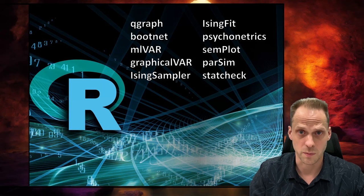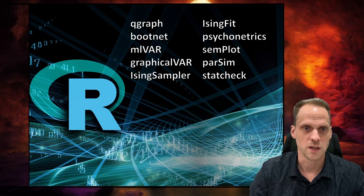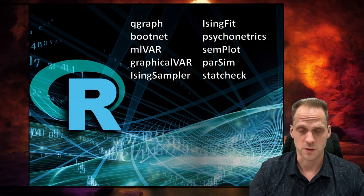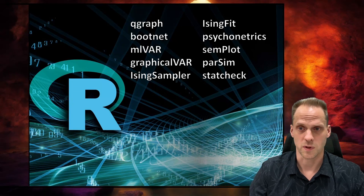And the Psychonetrics package is actually the biggest project I'm working on at the moment. This is a big R package for confirmatory network modeling and psychometric network modeling. For example, you can do multi-group analysis in there, or you can include latent variables. There's some methods for longitudinal data analysis that are not available in other packages. And things like that. I'll talk more about that at the end of this lecture as well. But if you're interested in that also, please reach out.